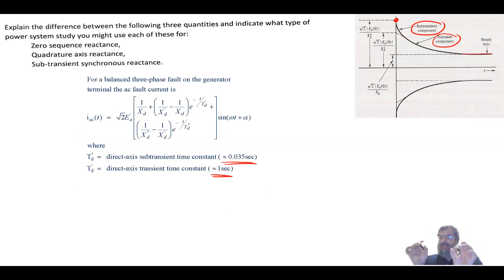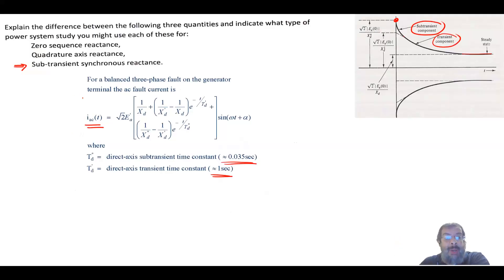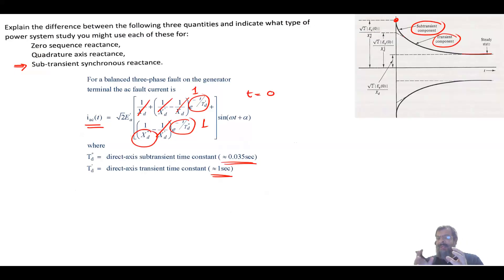In the sub-transient period, the current is very large, which means the dominant reactance limiting the current at the start of the fault is the sub-transient synchronous reactance. This is clearly shown in the fault current formula: at t=0, the exponential terms equal one, the other components cancel, and only one over xd double-prime (the sub-transient reactance) remains — this is the only reactance limiting the fault current at inception.